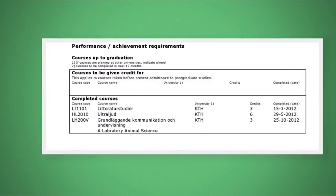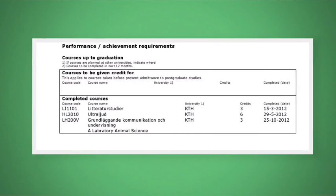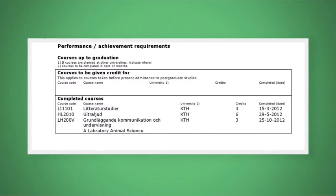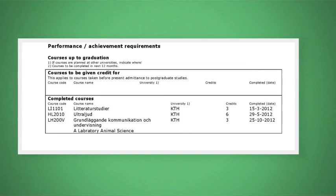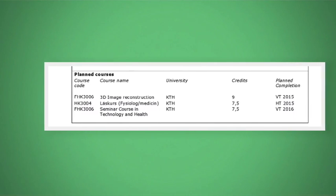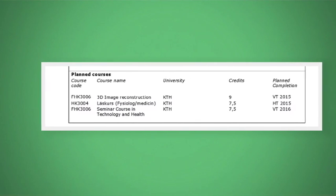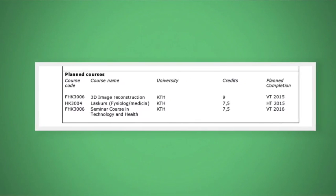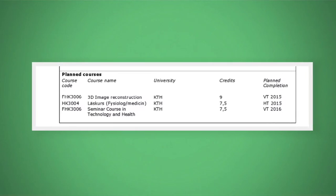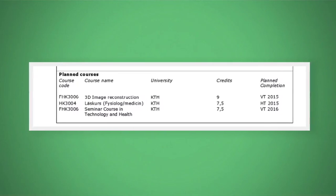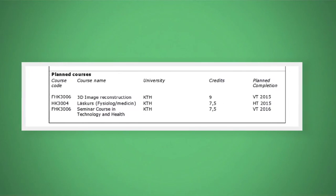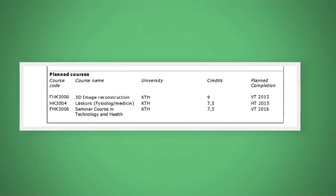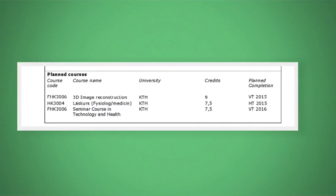Next is the section on completed courses. This will help you calculate how many percent of the required coursework you've completed. This is followed by the section of planned courses for the remainder of your PhD program. It's okay if this section is not 100% accurate, as long as you know what you're doing in the next six months.